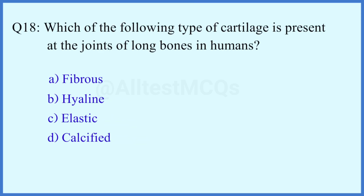Question number 18. Which of the following types of cartilage is present at the joint of long bones in humans? The right answer is option B: Hyaline.